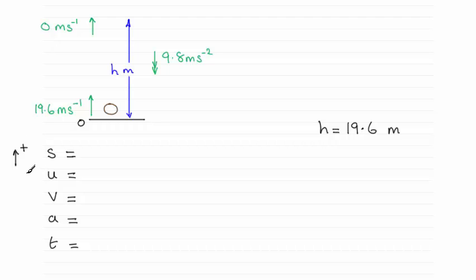Now we fill in the variables. S is the displacement and started from here, and it eventually goes up to here. That's a positive displacement, so that would be h. The initial velocity U, again, that's in the positive sense, so that's going to be 19.6. Final velocity V, that's going to be zero.